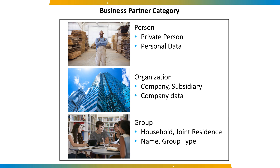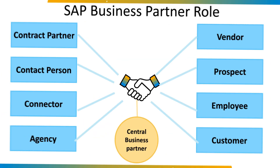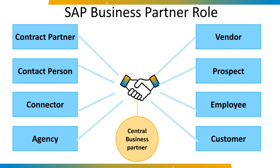A third category is Group — for example, a community of heirs. Assignment of the business partner category cannot be changed once the business partner has been created. The SAP Business Partner Solution is designed to reduce redundant partner information, achieved by general partner data which is shared by all kinds of business partners.